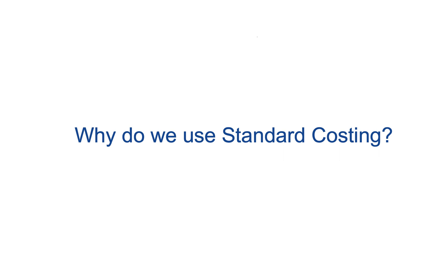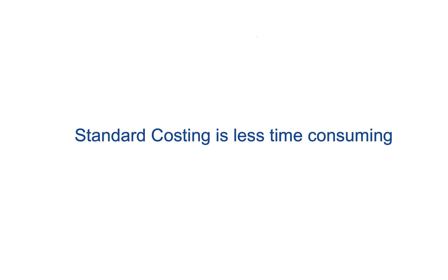Before we get into an example around standard costing, it's worth understanding why we use it. In the real world when preparing a budget, we'll likely use standard costing because it takes a lot of time to go line by line through material costs, labour, etc. Every time a change occurs, we'd have to refigure the budget, so standard costing saves a whole lot of time.